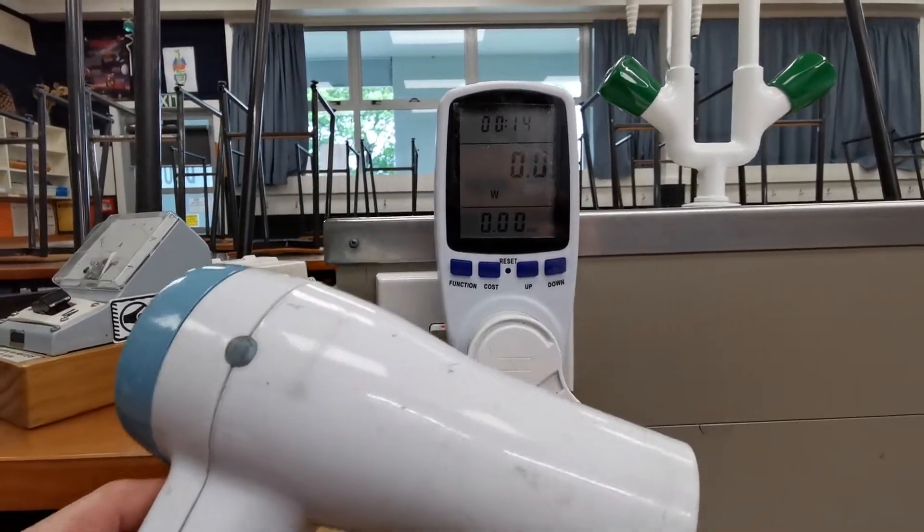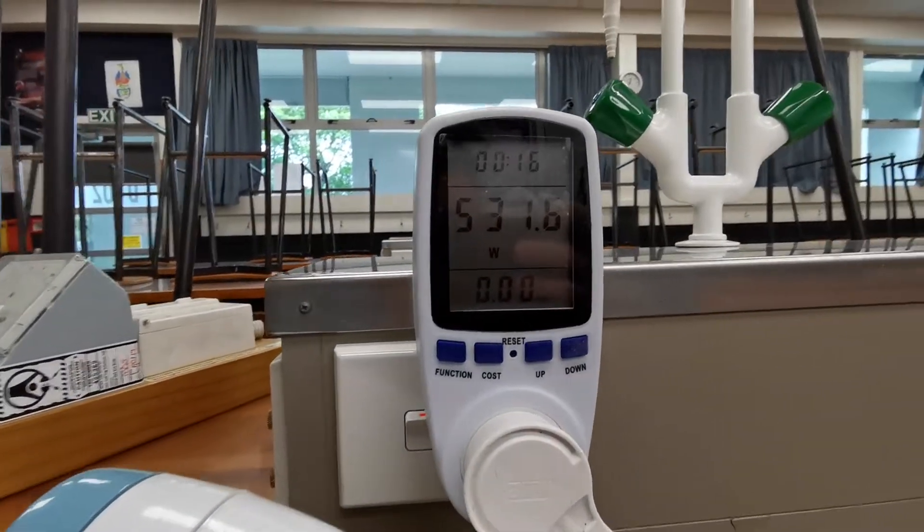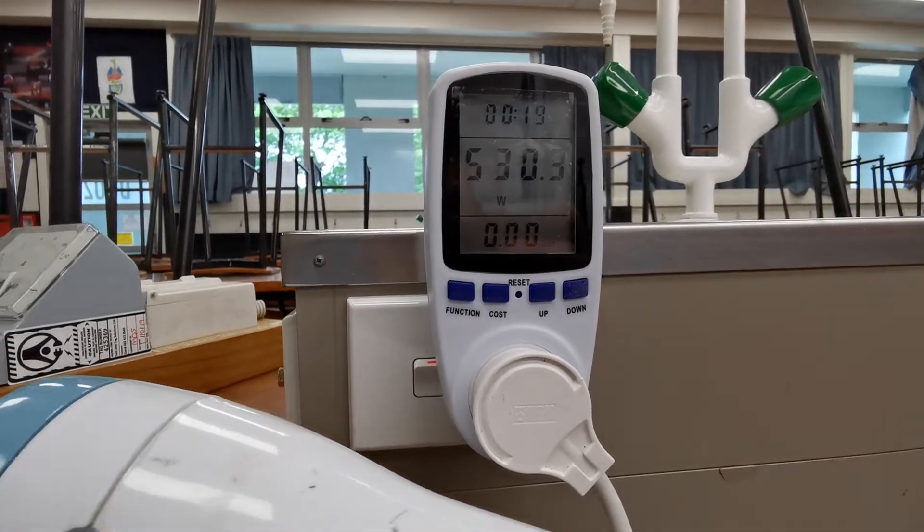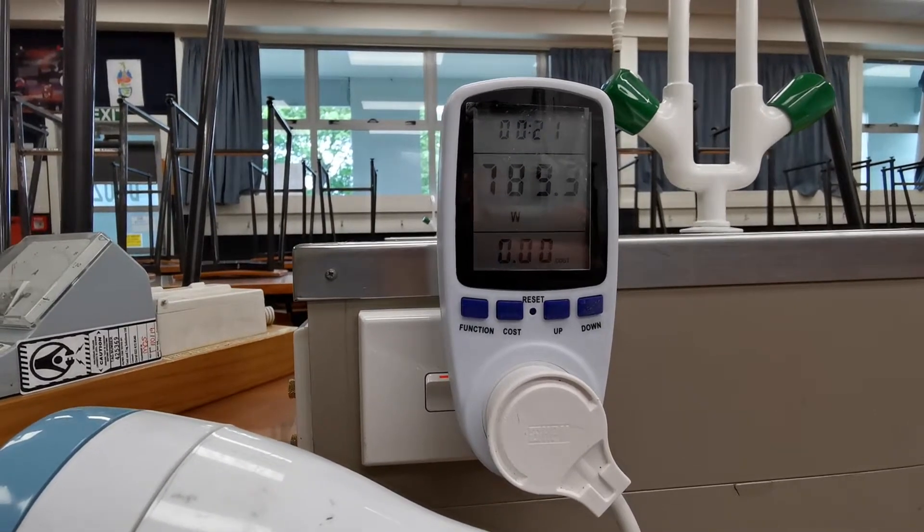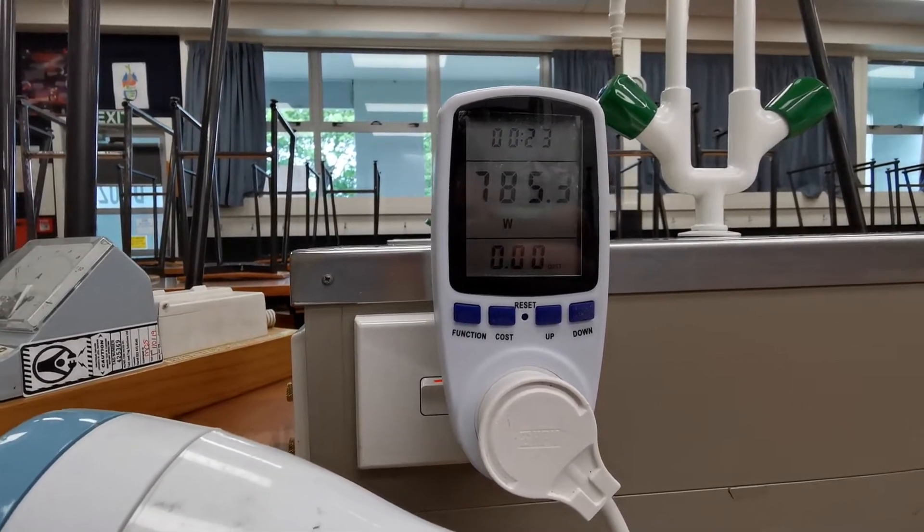And then you come over with your hairdryer and you turn your hairdryer on. So on low setting it's using 530 watts, and high setting 786 watts.